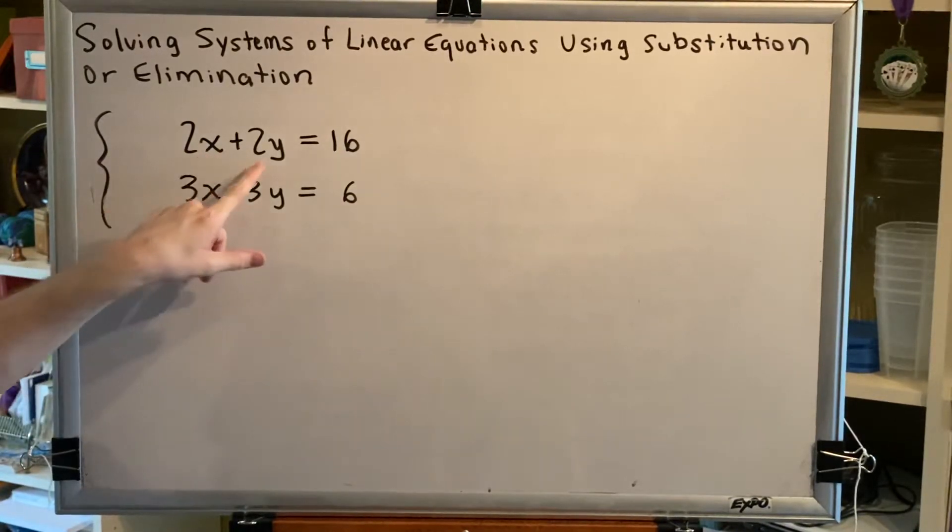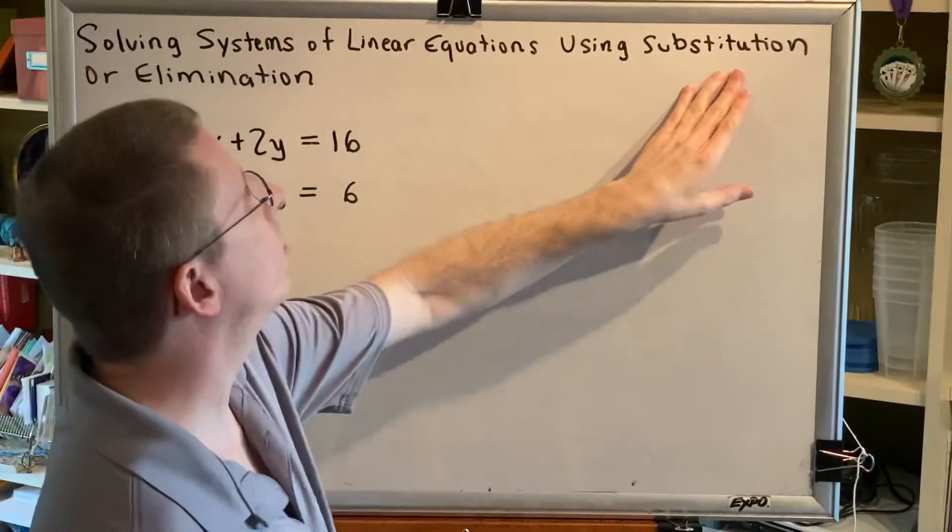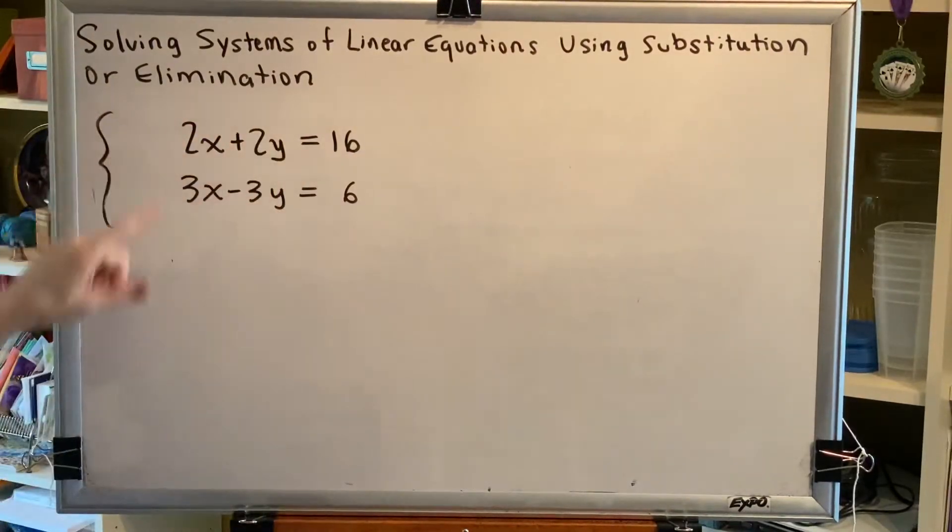Coefficient here is positive 2, positive 2, positive 3, negative 3. Since we don't have any ones or negative ones, we won't use substitution. Instead, we will use elimination.